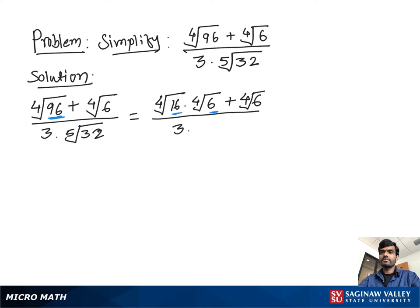5th root of 32 is 2 because if we raise 2 to the 5th power it gives us 32, so 3 times 2 is 6. 4th root of 16 is 2 because if we raise 2 to the 4th power it gives us 16.